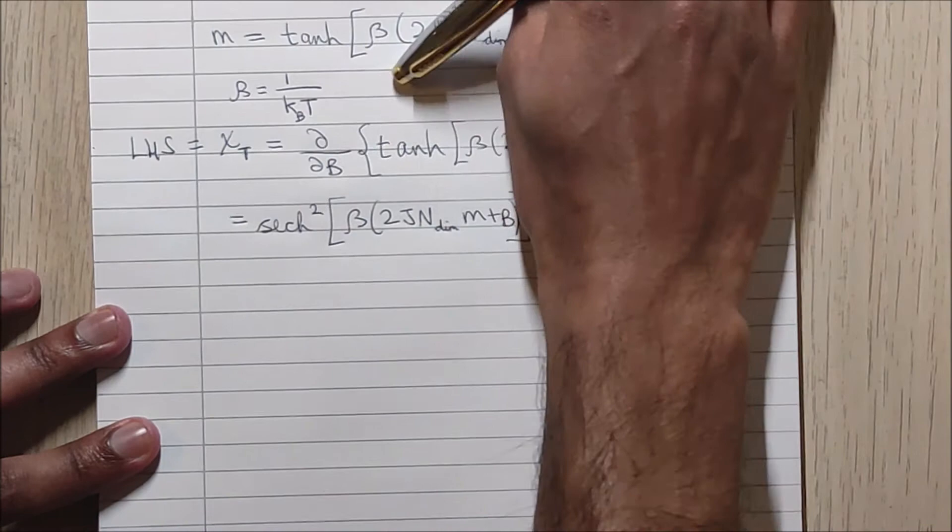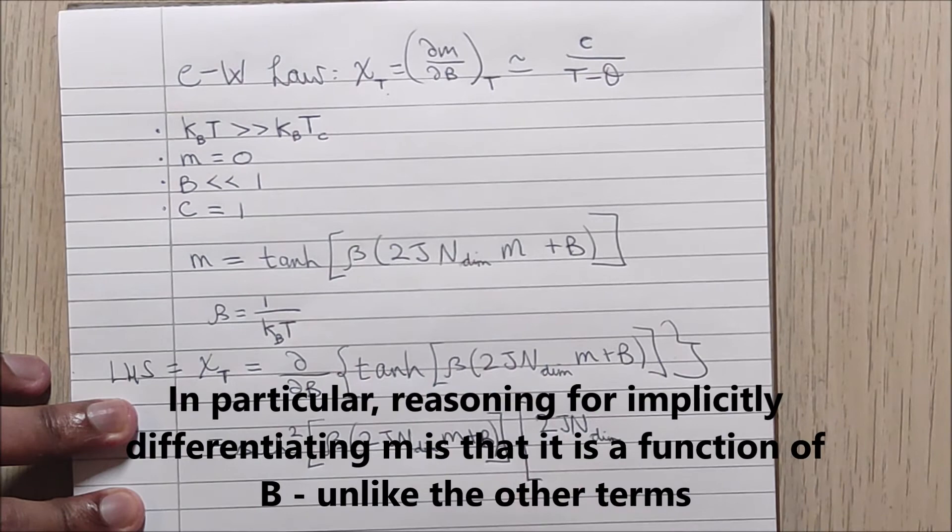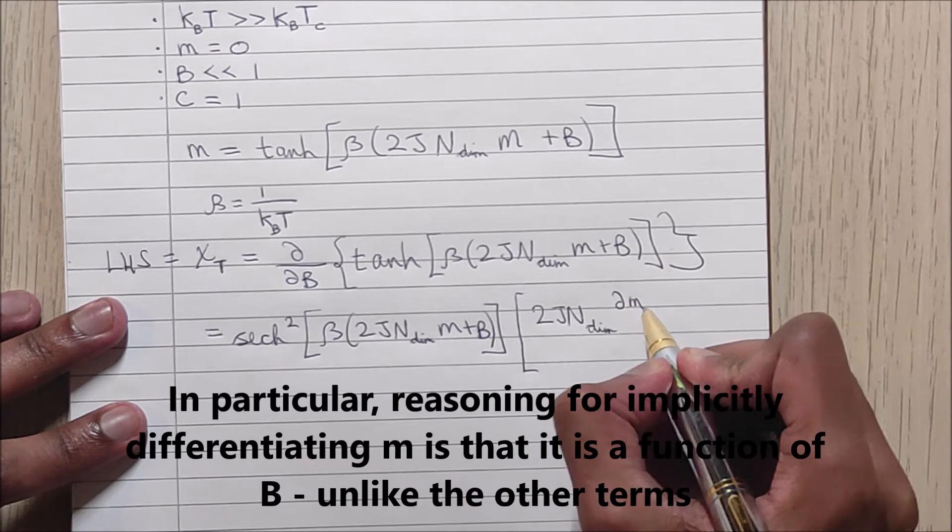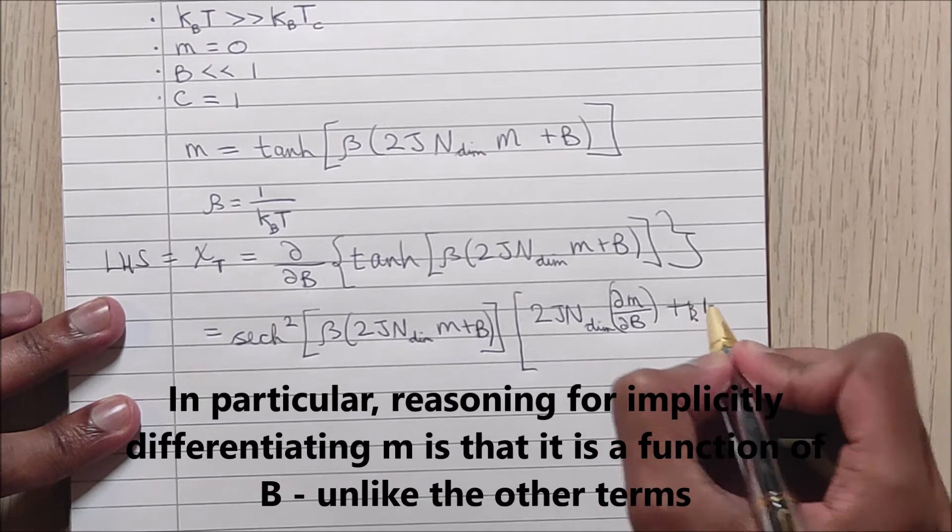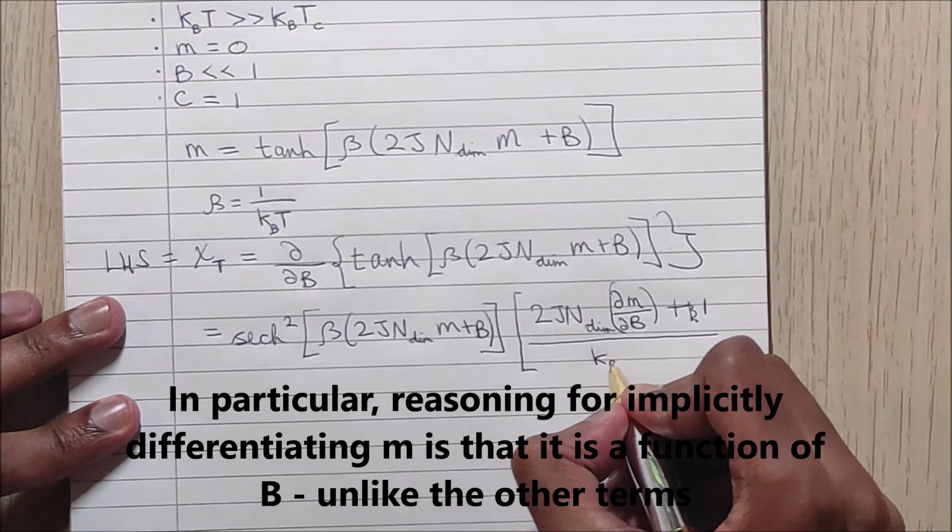But we also have an M in our expression, so this is where we use implicit differentiation. We substitute that we are differentiating M with respect to B, plus 1 from this B term, all divided by the definition for beta, which is KBT.